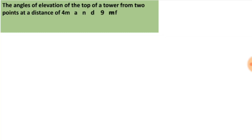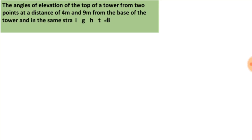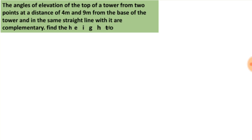The angles of elevation of the top of a tower from two points at a distance of 4m and 9m from the base of the tower, and in the same straight line with it, are complementary. Find the height of the tower.